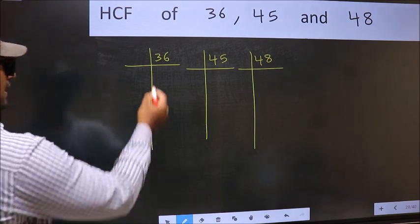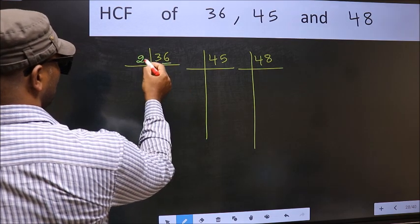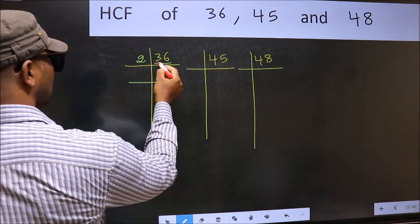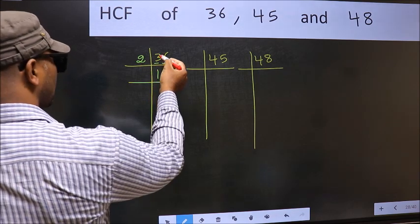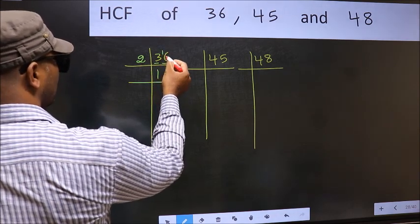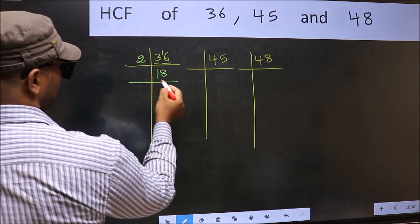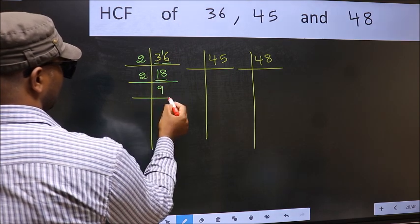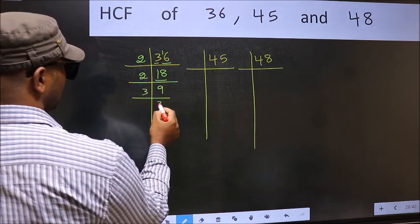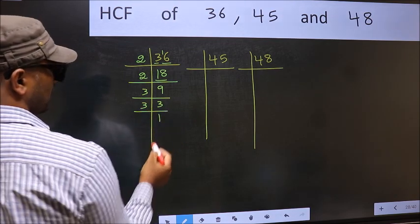Next, in this number, last digit 6, even, so take 2. First number 3, nearest in 2 table is 2. 3 minus 2 is 1, carry forward to get 16. 2 times 8 is 16. Now 18 is 2 times 9 is 18. 9 is 3 times 3 is 9. Now 3 is the prime number, so 3 times 1 is 3.